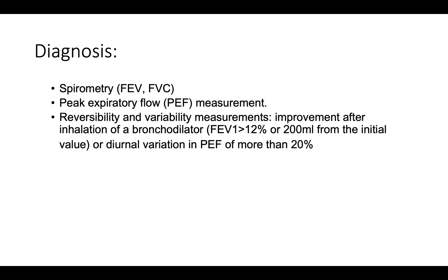Diagnosis includes spirometry or peak flow measurement. A peak flow reading of less than 80% of the predicted value for that patient's age, race and sex indicates increased risk of asthma; below 60% suggests confirmed asthma. On spirometry, both FEV1 (forced expiratory volume) and FVC (forced vital capacity) are reduced. Asthma is considered an obstructive disorder — patients can typically take deep breaths during an attack, but the problem is during expiration.